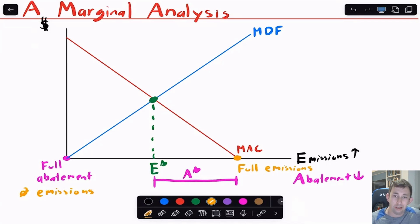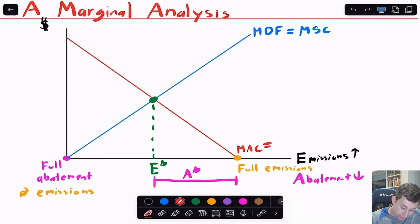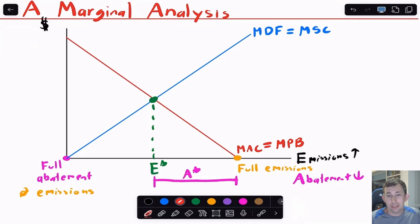We need to think about this using marginal private benefit and marginal private cost. The MDF curve, since costs slope upward, is a marginal social cost — it's a cost to people of having to breathe this dirty air. The marginal abatement cost curve is actually a marginal private benefit of emitting, because the factory gets to avoid abatement costs if they emit more. Private benefits are generally diminishing, giving us a downward sloping line — in this case, the private benefit of emissions.